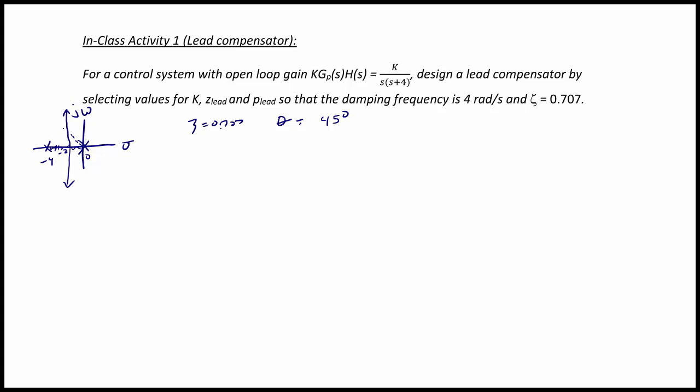So I now know that I need my desired poles, which I'm going to indicate by these boxes, to be at negative 2 plus or minus j2. So my characteristic equation is delta of s is equal to s squared plus 4s plus k. And my desired characteristic equation is s plus 2 plus j2 times s plus 2 minus j2, which equals s squared plus 4s plus 8.